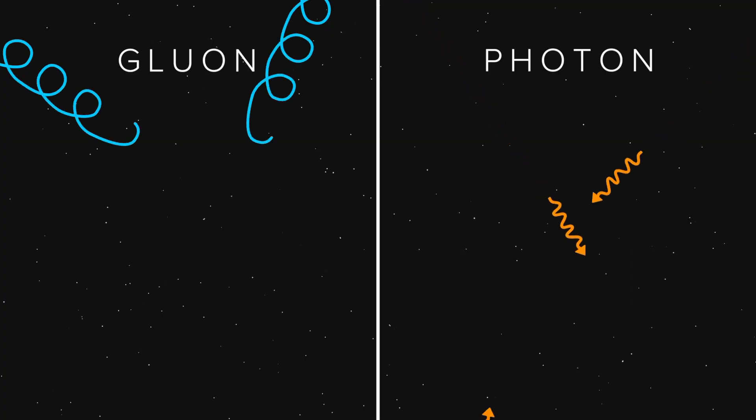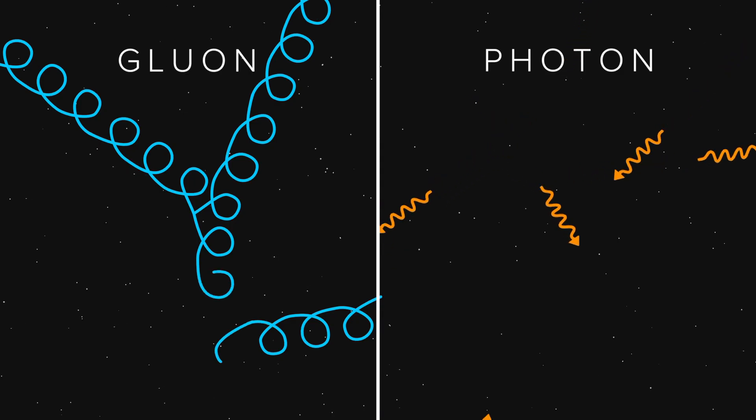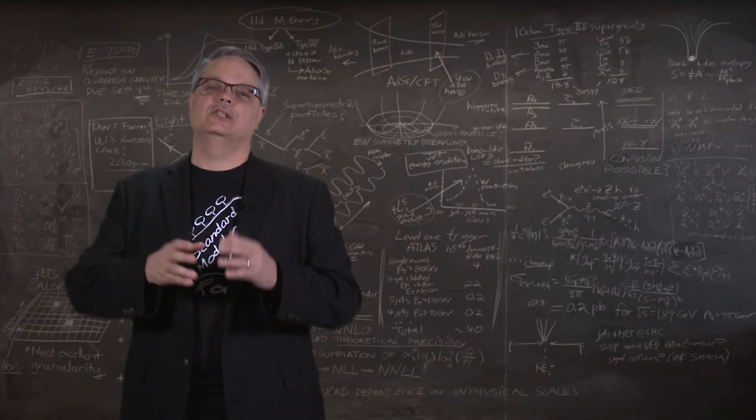Because gluons interact with colored particles, gluons can interact with other gluons. That's way different than two photons, which are completely oblivious of each other's existence. And it qualitatively changes the behavior of the strong force.